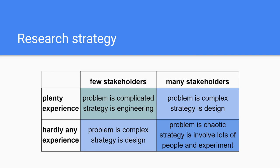The top category in complexity involves problems with many stakeholders and hardly any experience with solutions. Managing a conflict crisis by the government fits this category. To come up with solutions, you need to involve lots of people and experiment to see what works and what doesn't, and also see what is acceptable to the majority of stakeholders. Problems like this can be called chaotic, and there is no handbook to solve them.